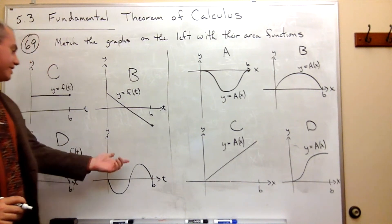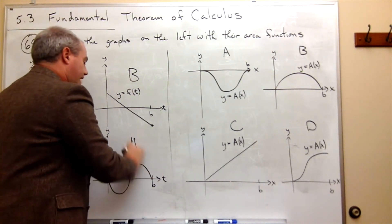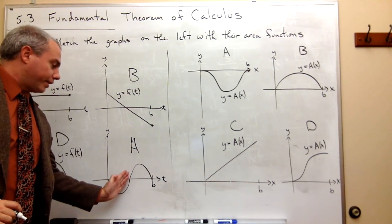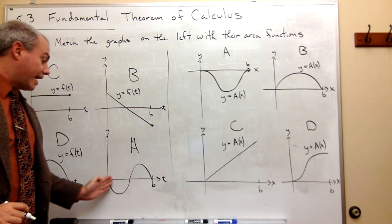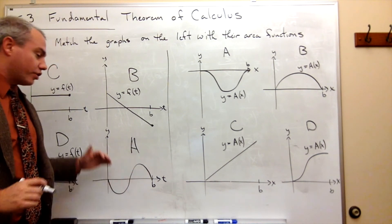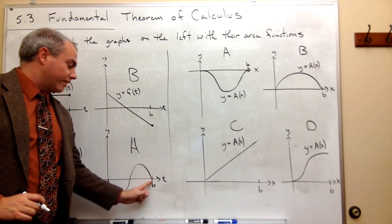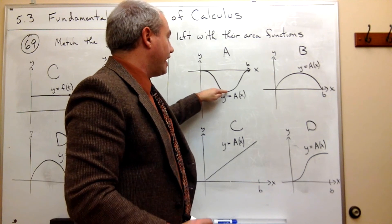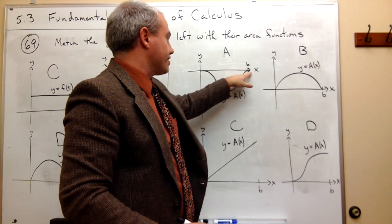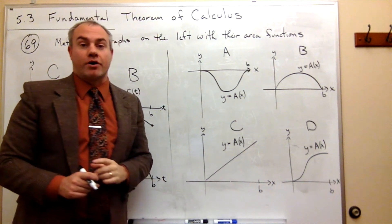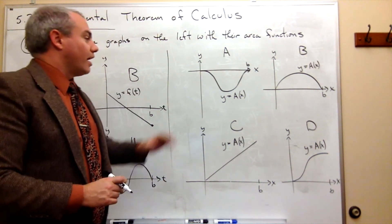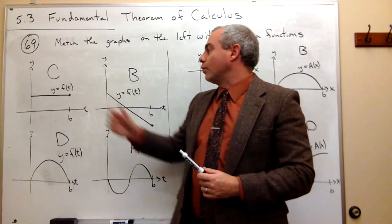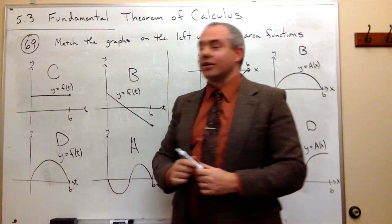Finally, we know by default that the last graph is A. But let's look at it — I pick up negative area to the halfway point, so the area function should be going negative. Then I pick up positive area, so it should get less and less negative until eventually I get back to zero. So it's going negative until the halfway point, then less and less negative until I get back to zero again. A is perfect. So these are the four area functions and we have found how they match up with the functions f of t.